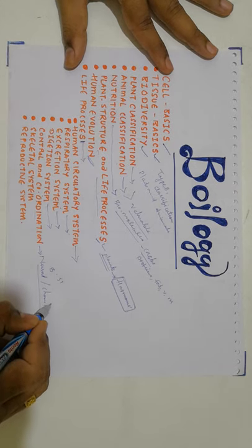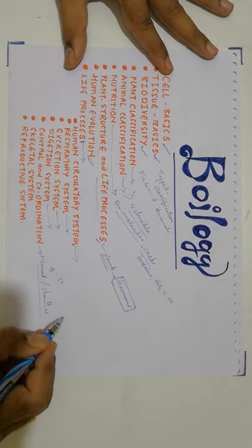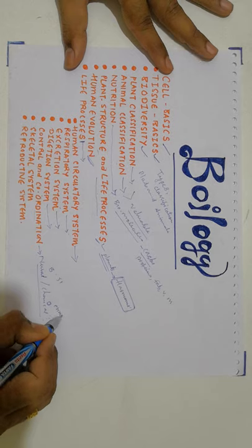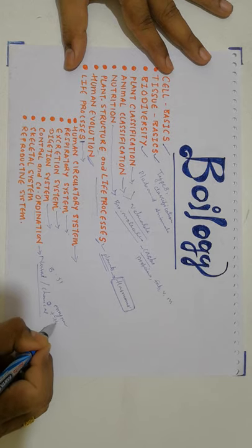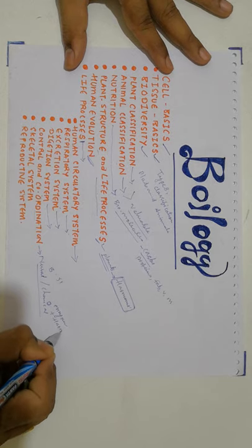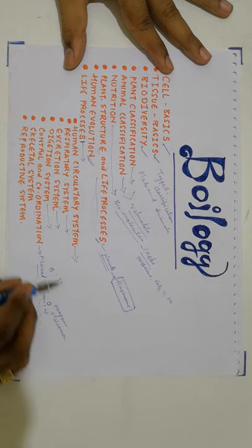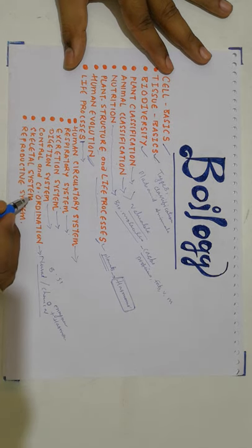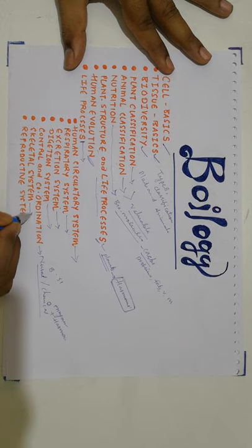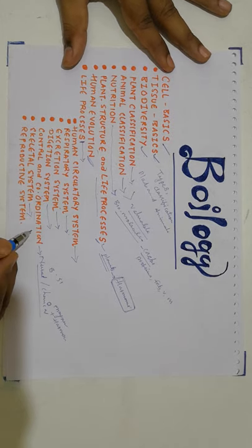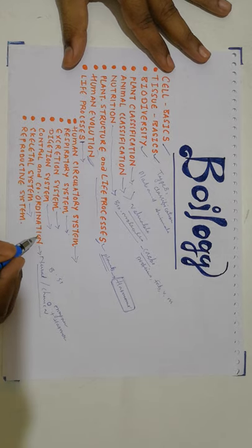When we study chemical coordination, I am talking about different kinds of enzymes in the body as well as different kinds of hormones. This is followed by the human skeletal system, where we study different kinds of bones, their structure, joints, and types.